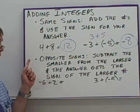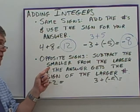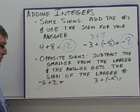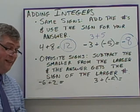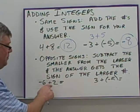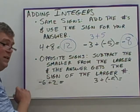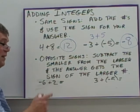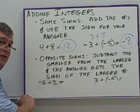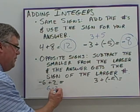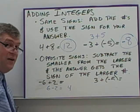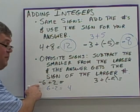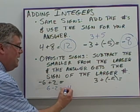If you have opposite signs when you're adding, the rule is to subtract the smaller number from the larger number, and the answer gets the sign of the larger number. When looking at negative 6 plus 2, we have two opposite-sign numbers — one's negative, one's positive. We're going to ignore the signs and ask which one's larger. Six is larger than 2, so we do 6 minus 2, which gives us 4. The sign of the larger number was negative 6, so our answer is negative 4.